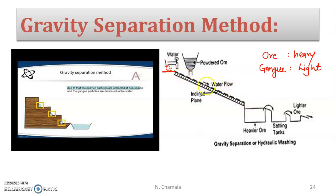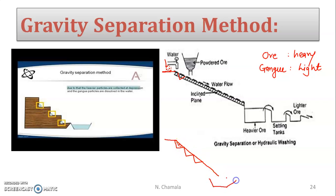The platform is a sloping platform with depressions created at particular intervals. When the powdered ore is washed with running water, the heavier ore particles settle into the depressions. The lighter gangue particles, being lighter in weight, are washed away with the water and collected in a container at the bottom.